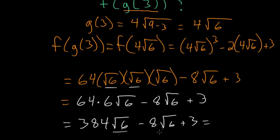Since they each have this root 6 in common, we can just subtract the coefficient of this from the coefficient of this. 384 minus 8 is simply 376.